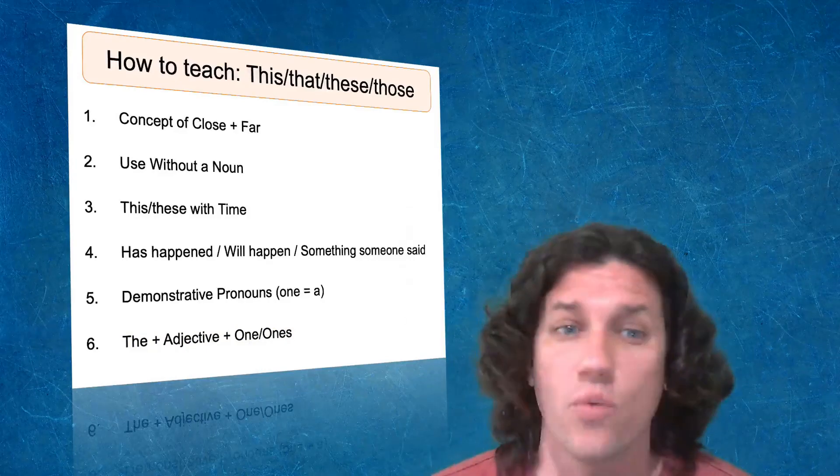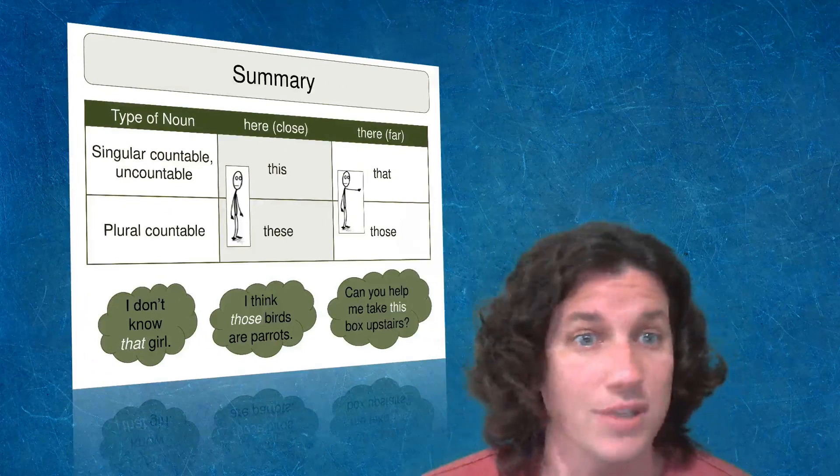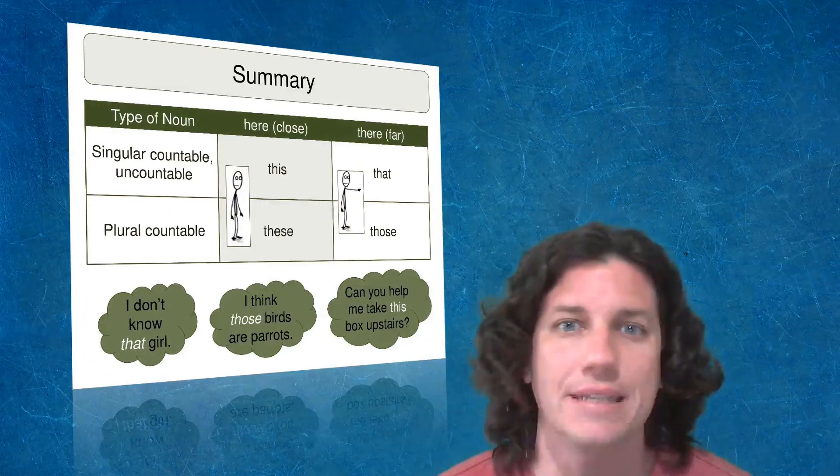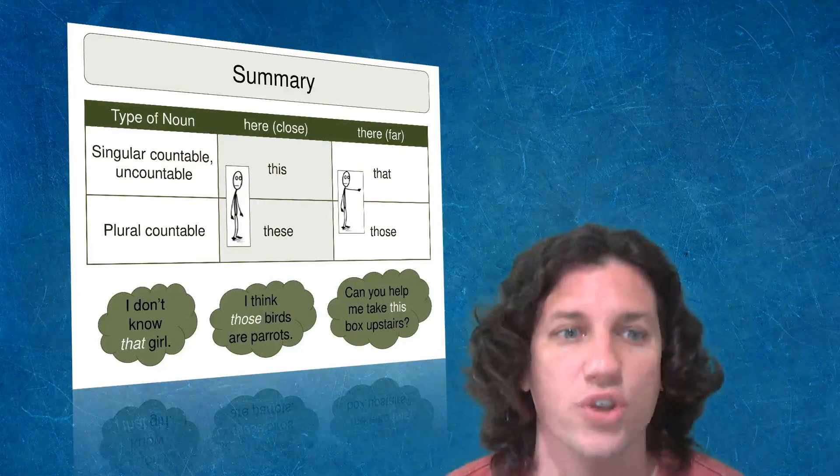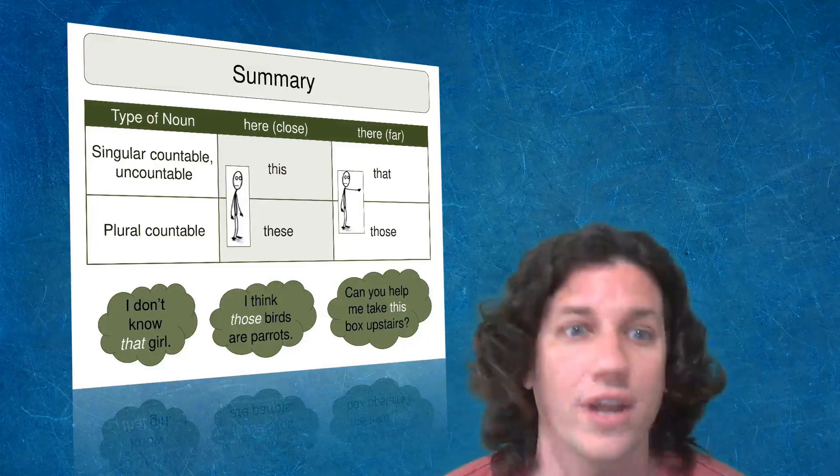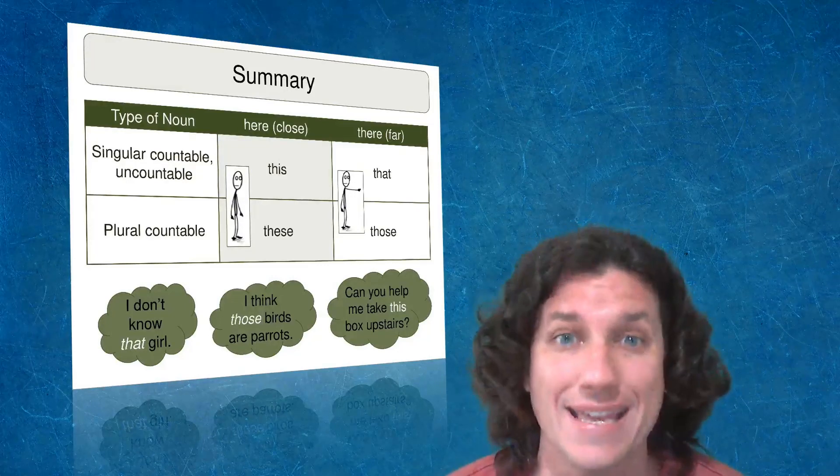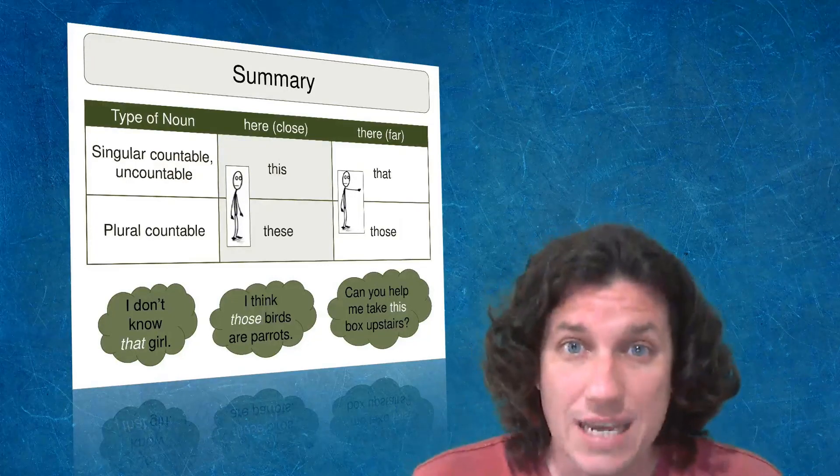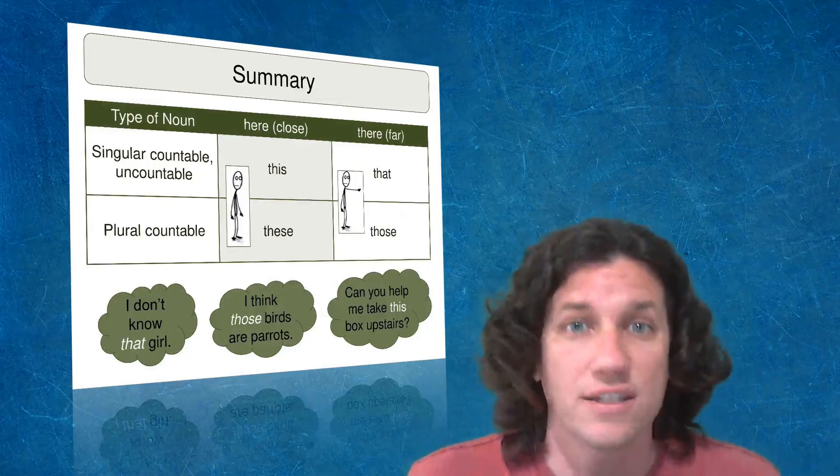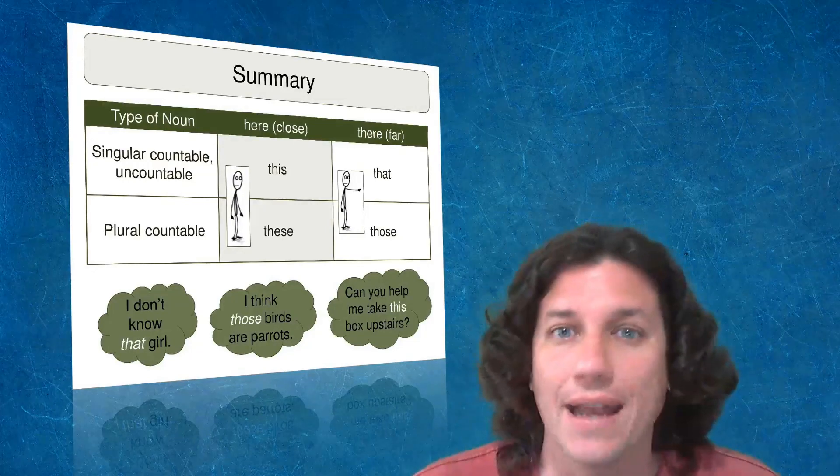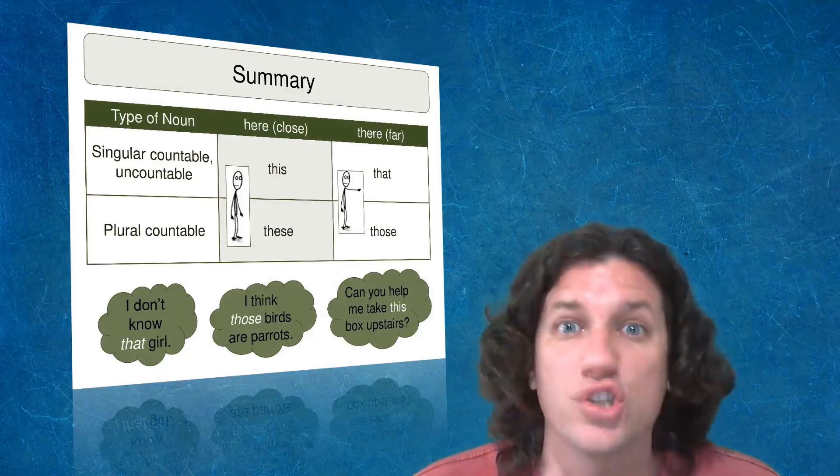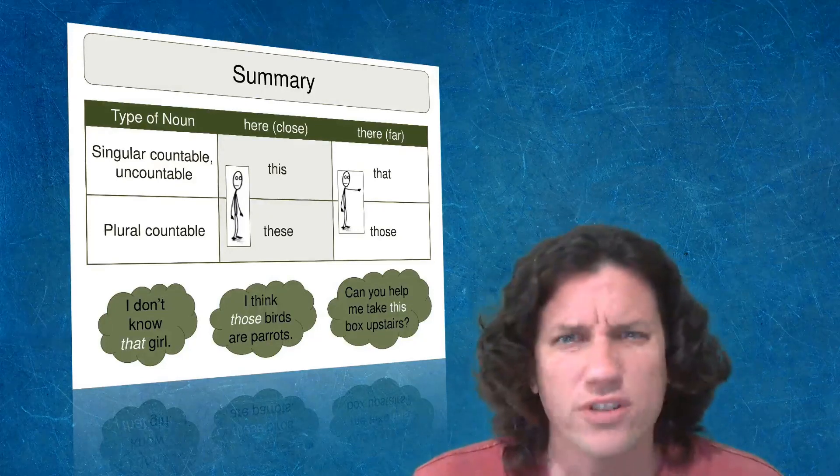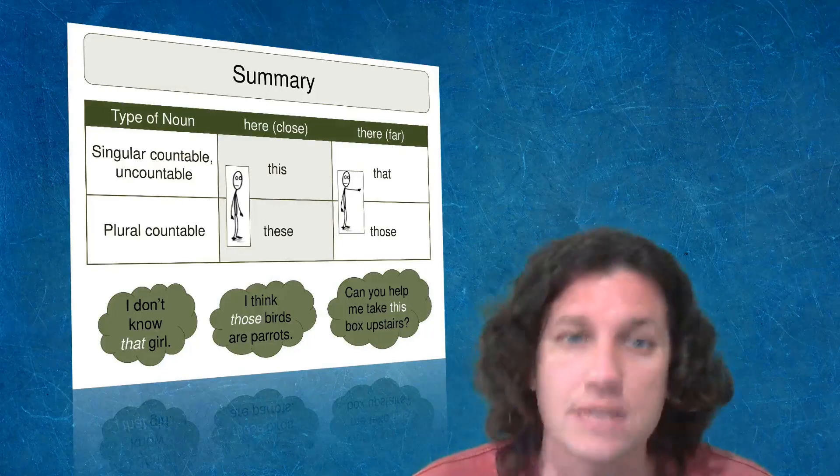We're going to get right into it, starting with the concept of close and far. So I'm going to show a slide. And this is the basic summary that you need to start with, with your students. So we're looking at type of noun and we're looking at here and there. When something is here, it's close. When something is there, it's far. And you've got to keep in mind that these things can depend on the student's perspective. So whether something is close or far depends on what the frame of reference is.